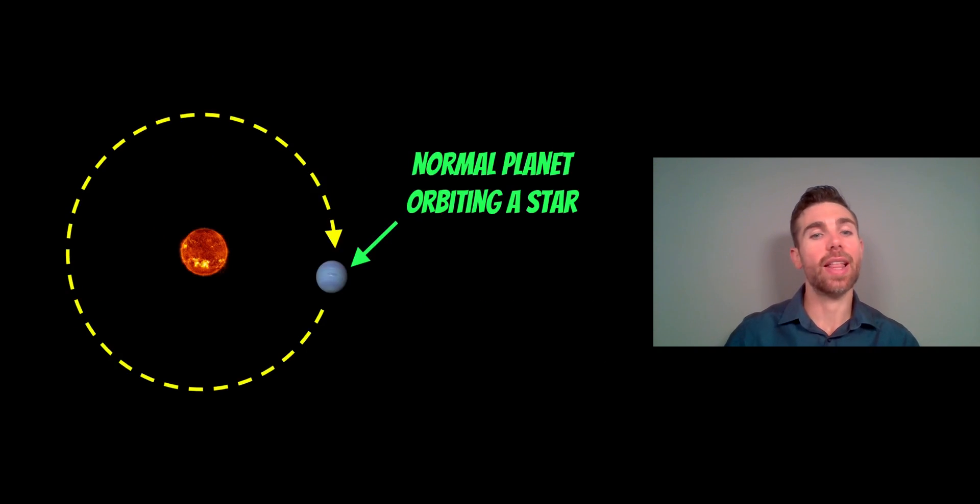So firstly, let's just recap what we normally think a planet is. The definition of a planet, which I did a separate video on, is that it should orbit a star. It should be big enough to have a spherical shape, so the gravitational forces mold it into a spherical shape. And it should be big enough that it gravitationally clears out its local neighborhood in its orbit. So that's what we would classify as a normal planet. We're quite familiar with those in our solar system.